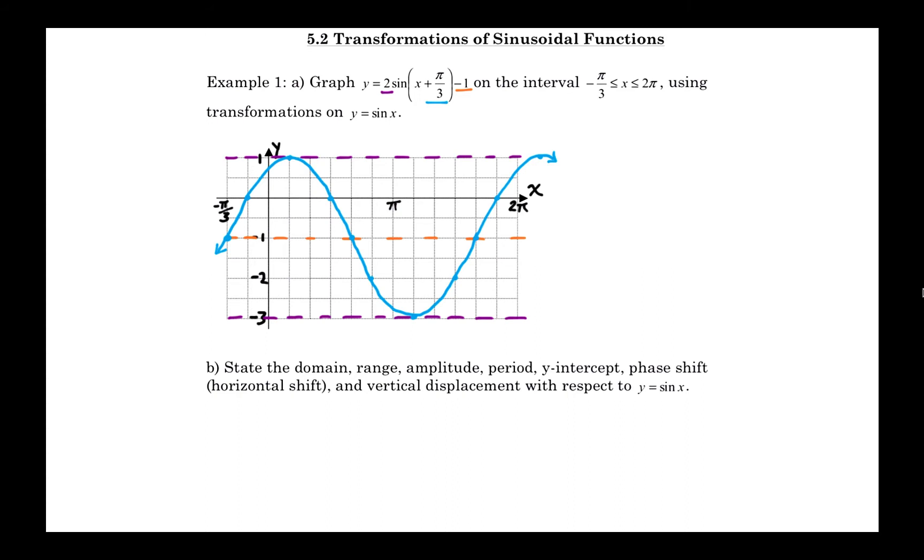Now let's talk about these different things like domain, range, amplitude, period, y-intercept, phase shift, which is the horizontal shift, and also the vertical displacement with respect to y equals sine x. So for the domain, x can be any real number. You can use anything as input, as x. The range, you'll notice that y is also a real number, but it is between negative 3 and positive 1.